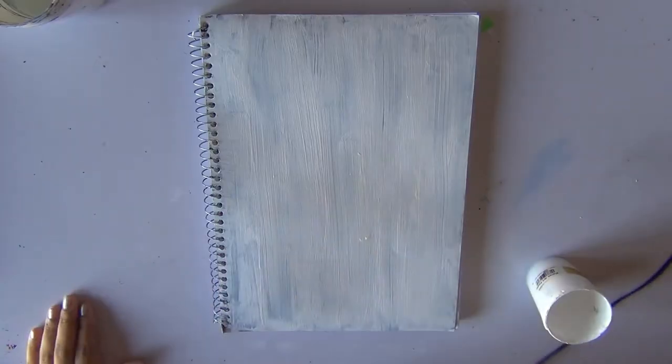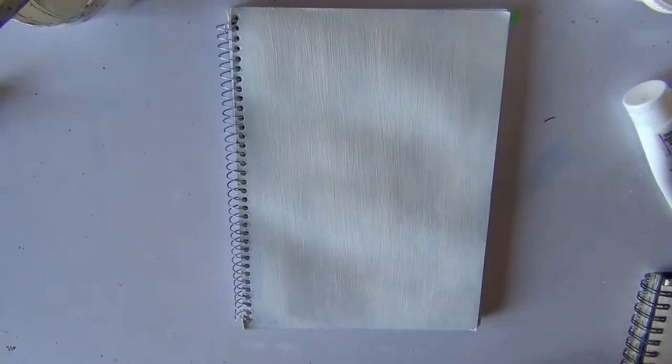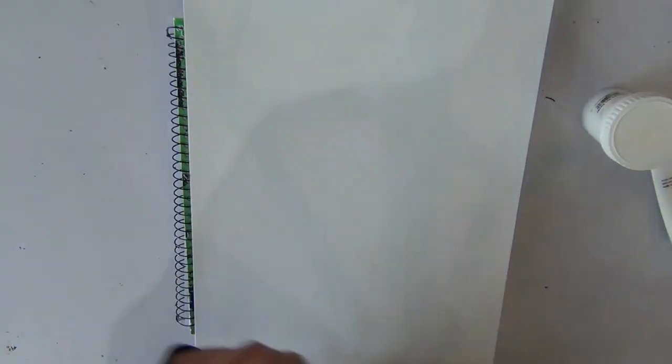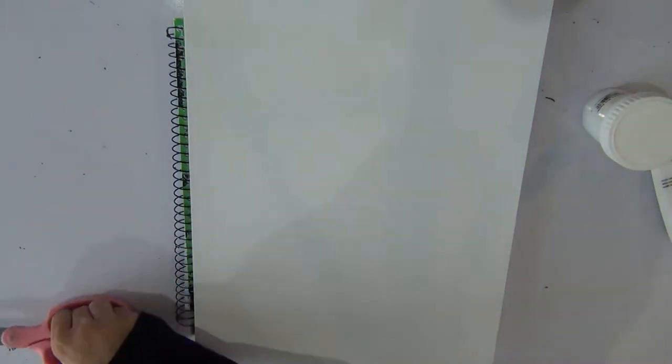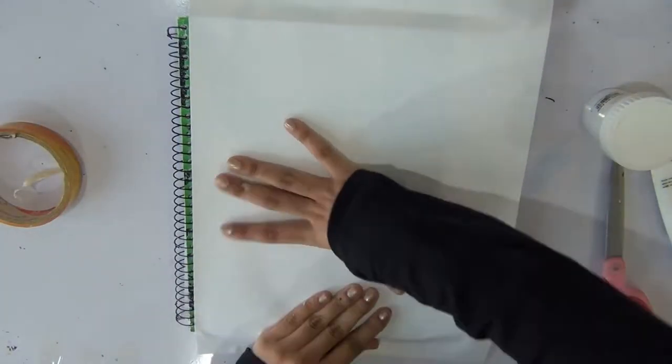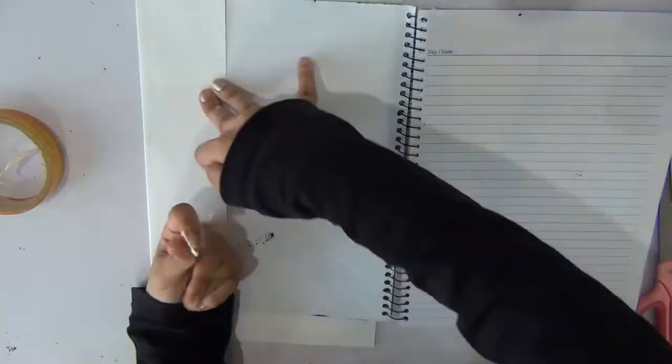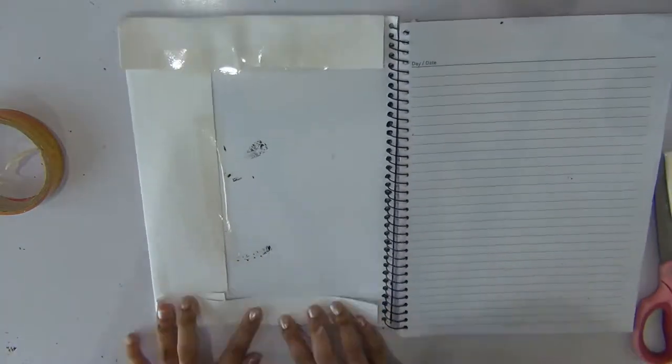The first way to do so is simply gessoing it or putting a layer of white paint. The second way is using a piece of paper and wrapping it up like a present. Both of these are super simple ways to do it. If you don't have paint, use paper. If you don't have paper, use paint.